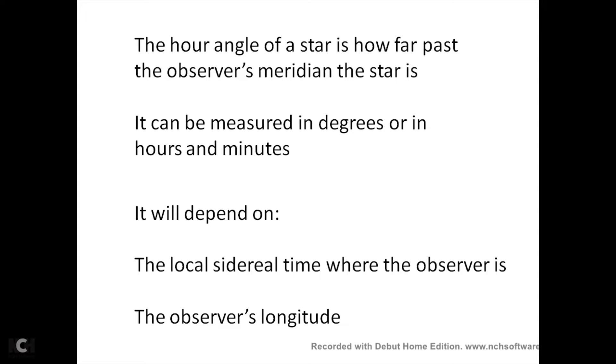Now the hour angle of a star is how far past the observer's meridian the star is. Again, it's the angle west of your local meridian. It can be measured in degrees or it can be measured in hours and minutes, and it will depend on the local sidereal time, where the observer is. As time passes by, the hour angle will get bigger, and it will depend on the observer's longitude as well.